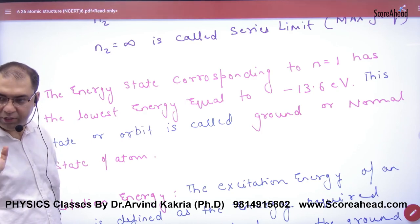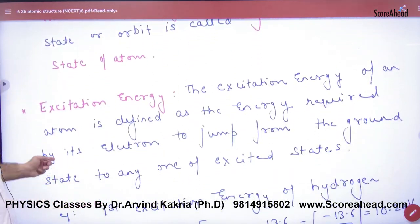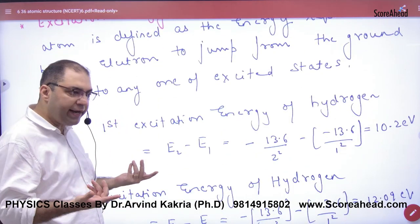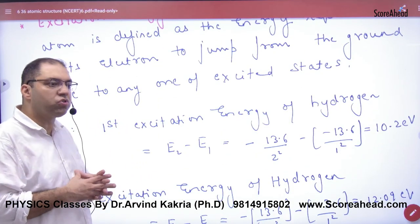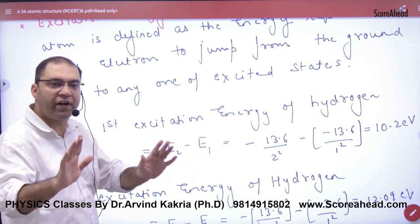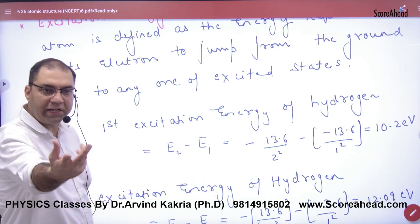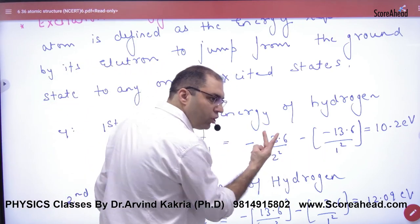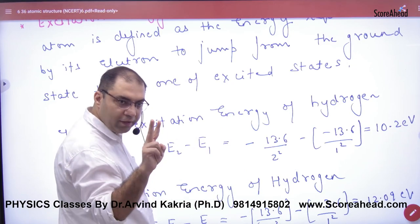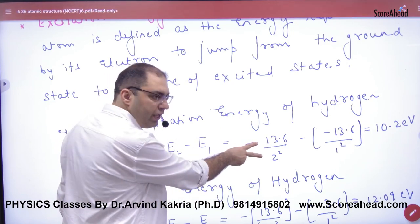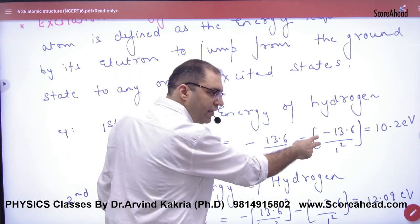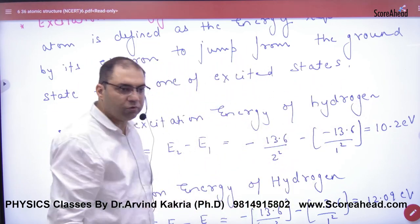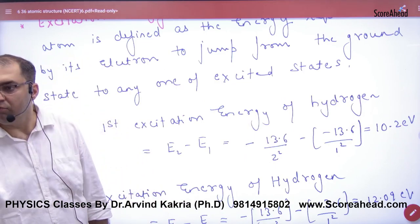Ground state energy is -13.6 electron volts. Next is excitation energy. What is excitation energy? When you excite the electron - suppose the question asks about first excitation of hydrogen. First excitation means the electron is going from n=1 to n=2. So the energy in shell 2 minus energy in shell 1 - when we take the difference for first excitation, the energy difference will be 10.2 electron volts.